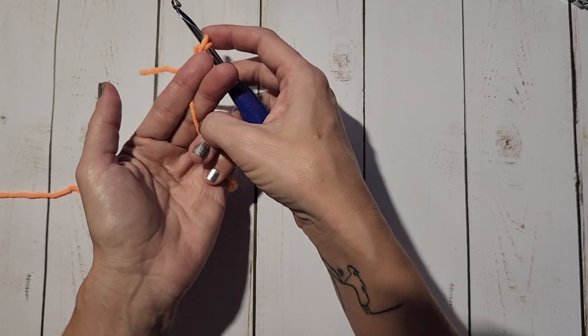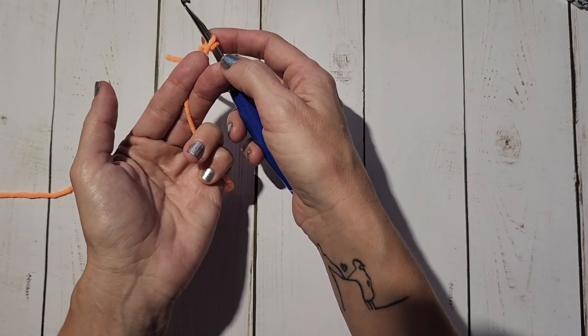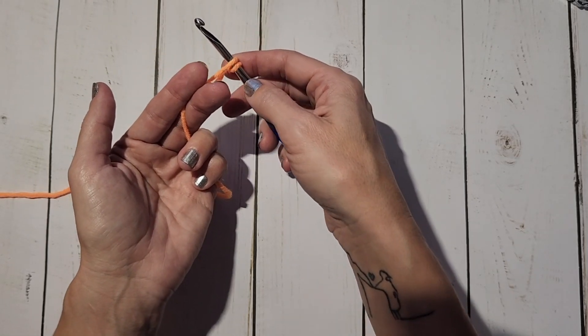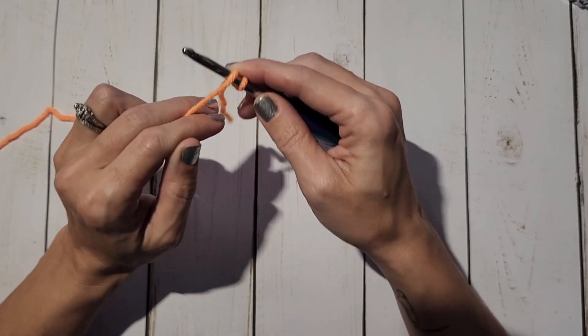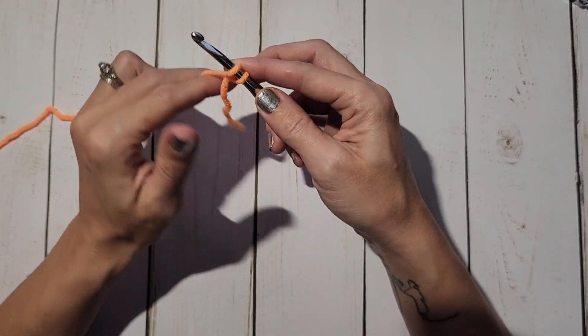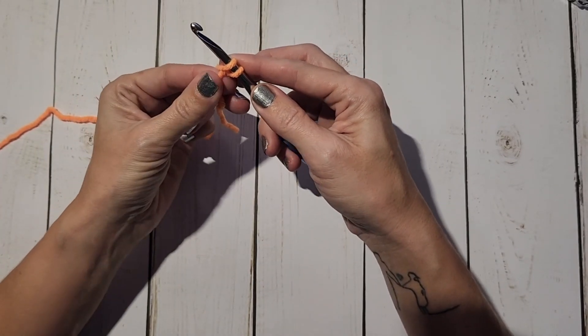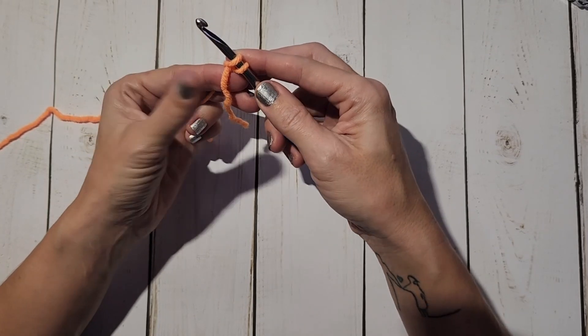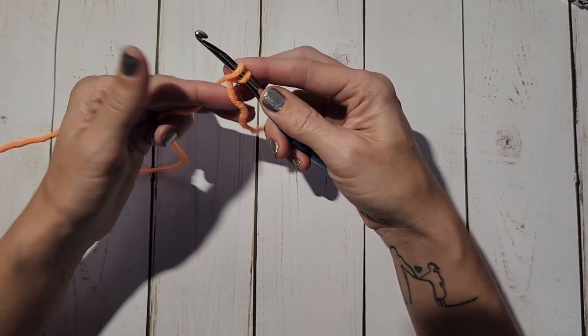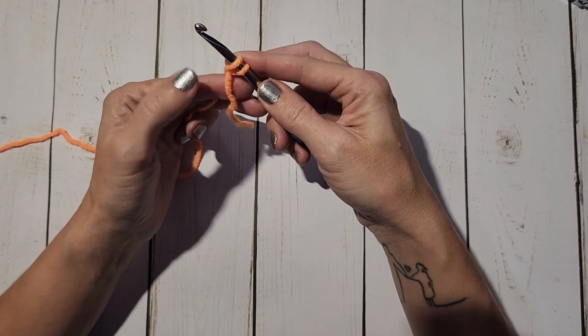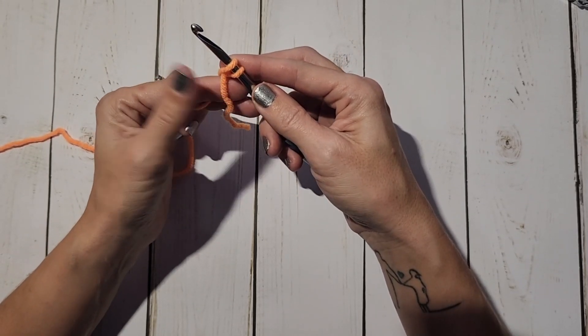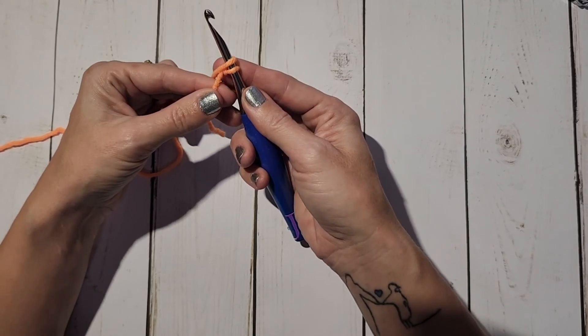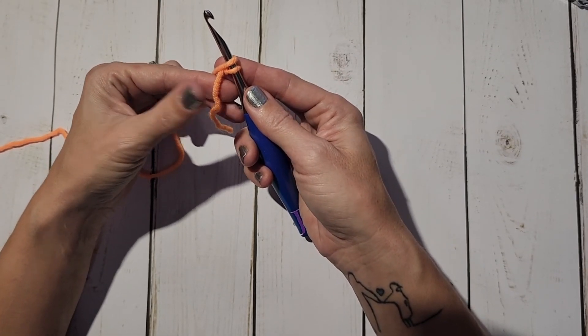bent while the yarn goes in between my middle and my pointer finger and it just kind of sits there. As I'm going, my working yarn is able to be braced, and then my thumb and my pointer finger work in tandem to hold whatever is being created down further.